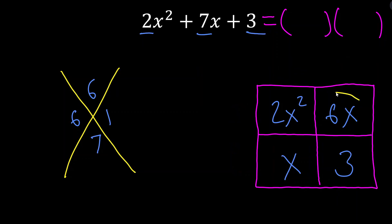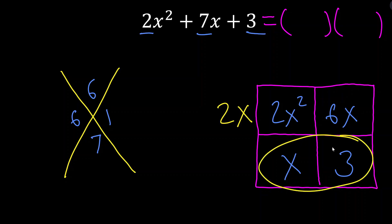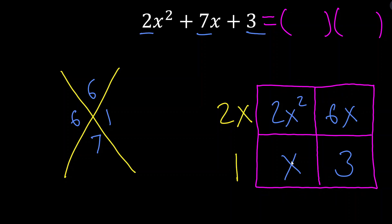Starting from the top row: what is the GCF between 2x² and 6x? The 2 and 6 have a 2 in common, and they both have an x in common, so we place 2x here. Moving to the bottom row: what do x and 3 share in common? They share a factor of 1 — so we write 1 here. For the left column, 2x² and x share just an x. For the right column, 6x and 3 share just a 3.